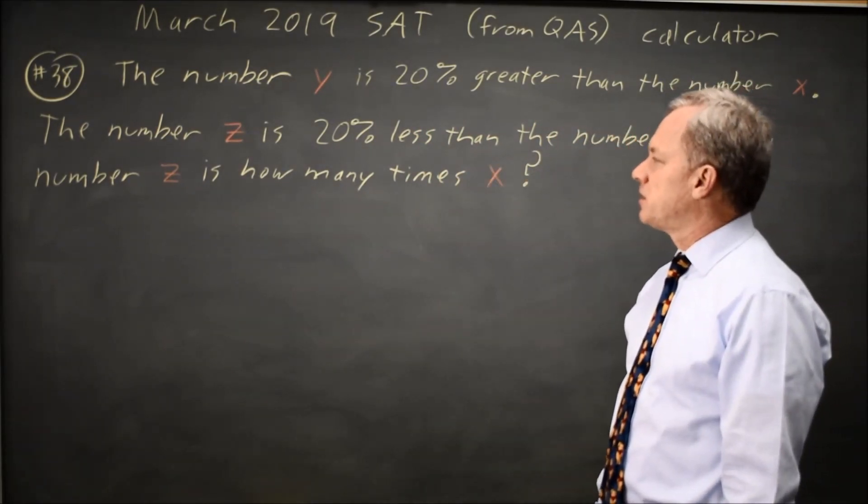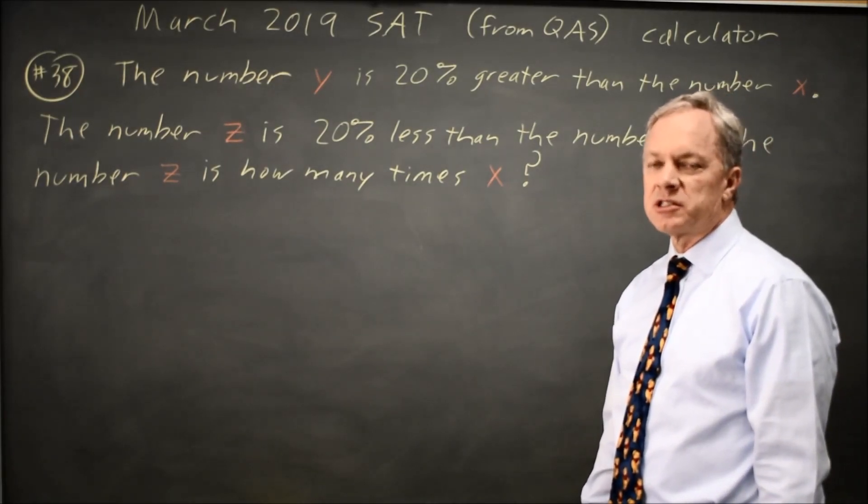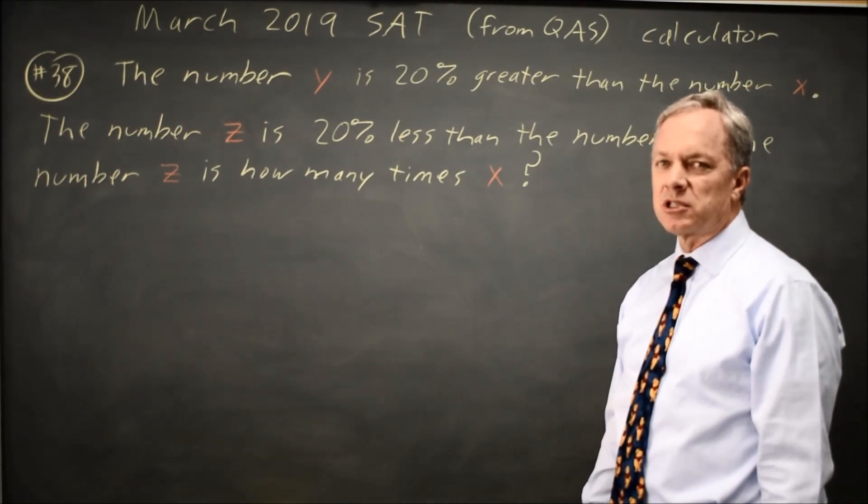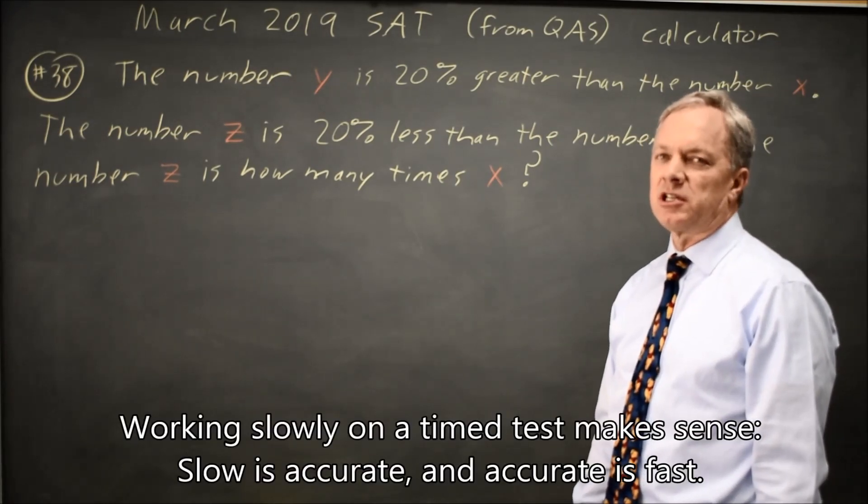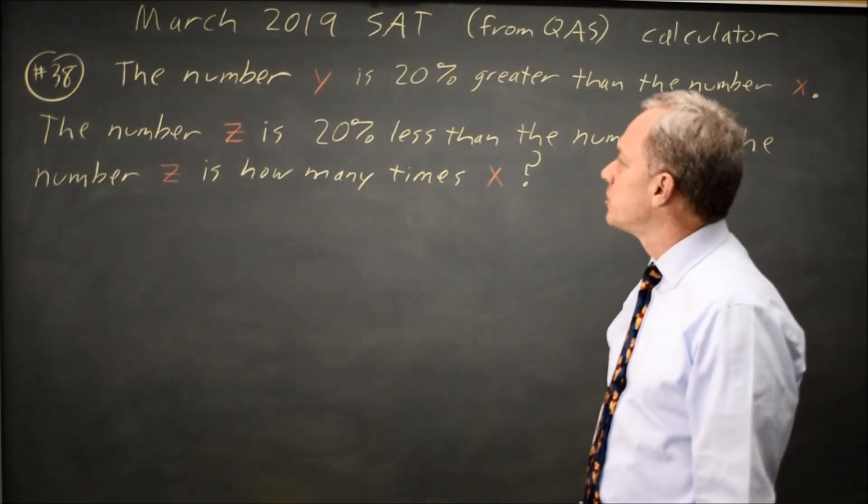And then they say Z is how many times X. It's tempting to say 1, but that turns out not to be correct. Always work slowly and carefully, especially on the last problem. There may be a subtle trick that tempts you to make an error.